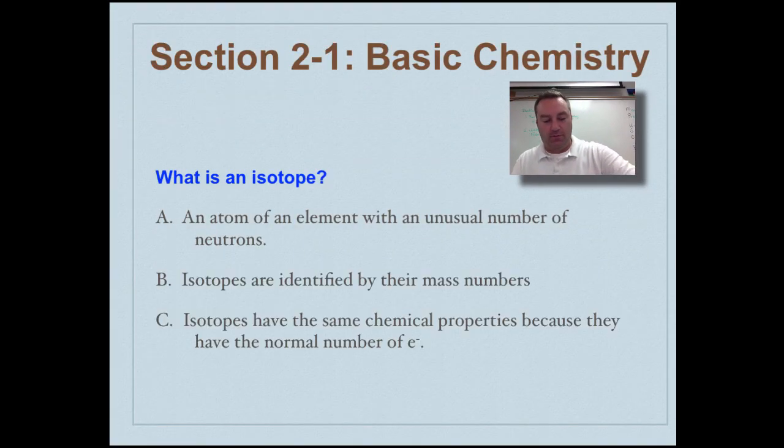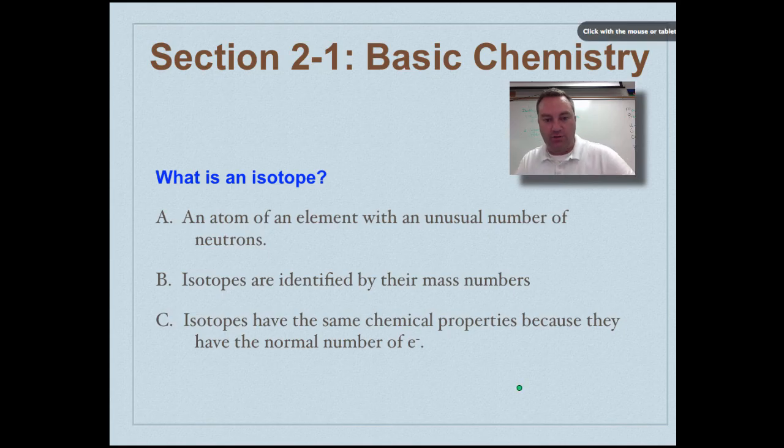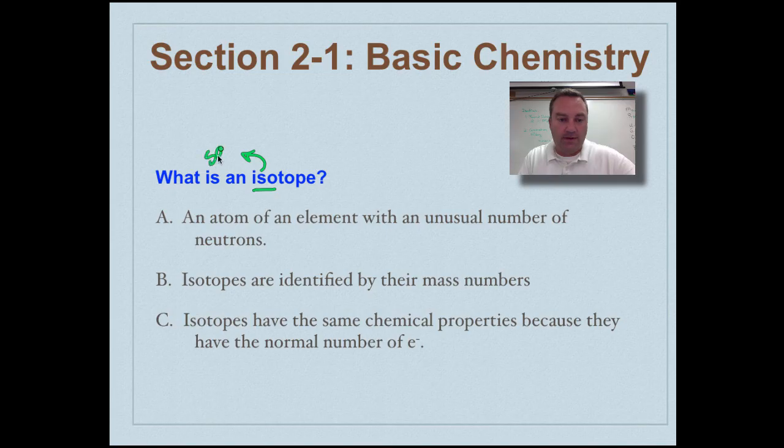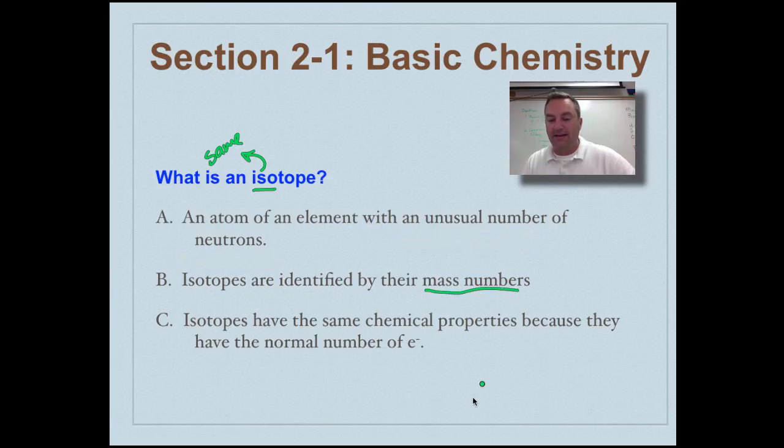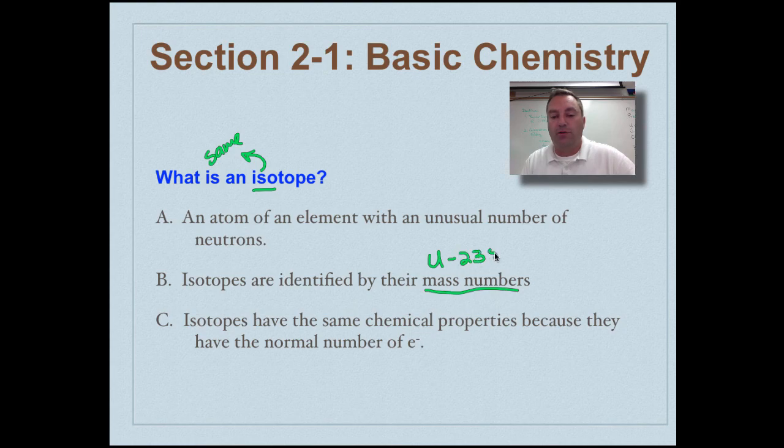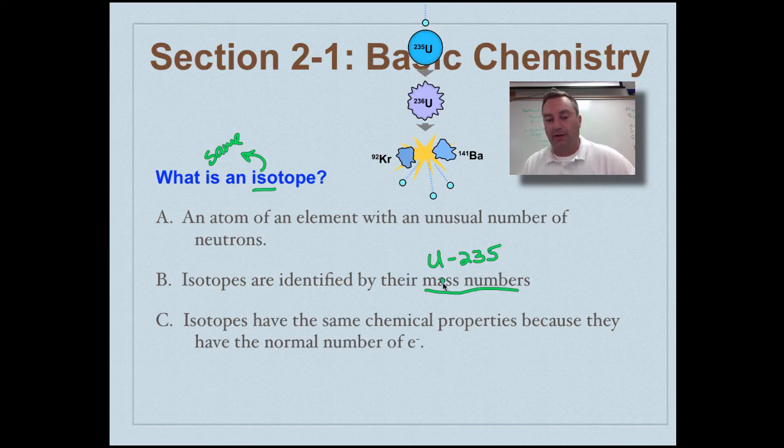So what's an isotope? If you look at the word isotope, it's trying to tell you what it means. ISO is simply a word that means the same. It's an atom of the element, so it's the same element with the same number of protons, but it has an unusual number of neutrons. So it's going to have a slightly different mass number. In fact, we identify isotopes by their mass number. So think of uranium-235.